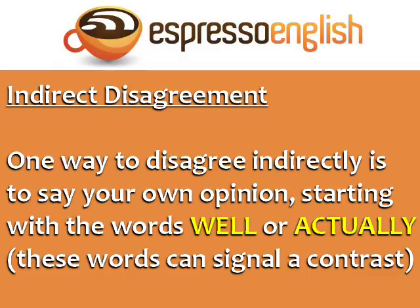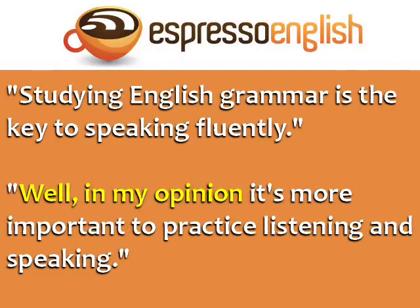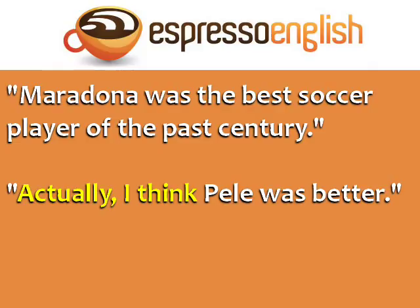Indirect disagreement: one way to disagree indirectly is to state your own opinion starting with the words 'well' or 'actually' — these words signal a contrast. For example, if a student says 'Studying English grammar is the key to speaking fluently,' you can say 'Well, in my opinion it's more important to practice listening and speaking.' Or if your friend says 'Maradona was the best soccer player of the past century,' you can say 'Actually, I think Pelé was better.'